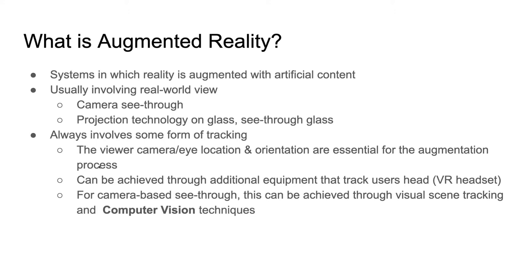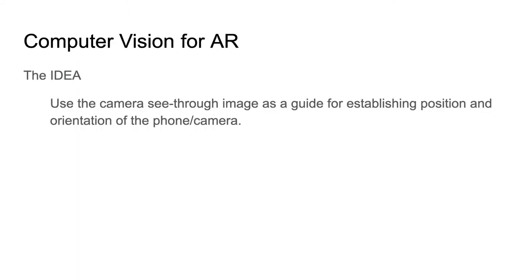The viewer location or camera location and orientation are essential for the augmentation process. For example, with some VR headsets we know exactly where the headset is through trackers, enabling very good augmentation of the camera see-through view. Or we determine position and orientation through computer vision techniques — marker-based, markerless, natural feature tracking, continuous discovery — all of these use computer vision, which is a core fundamental aspect required for augmented reality to be possible.